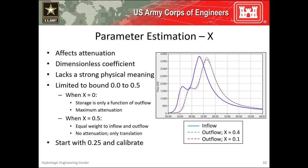X is a dimensionless coefficient that controls attenuation. Since attenuation is numerical when using this method, this parameter lacks a strong physical meaning and can't be easily estimated from physical characteristics of the reach. However, X must be between 0 and 0.5. When X equals 0, storage becomes solely a function of outflow, resulting in the maximum amount of attenuation. When X equals 0.5, storage is equally weighted between inflow and outflow, and no attenuation will be simulated. Typically, I set X equal to 0.25 and then calibrate using observed data.